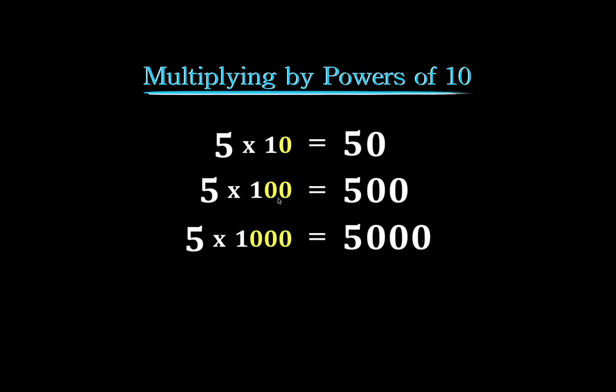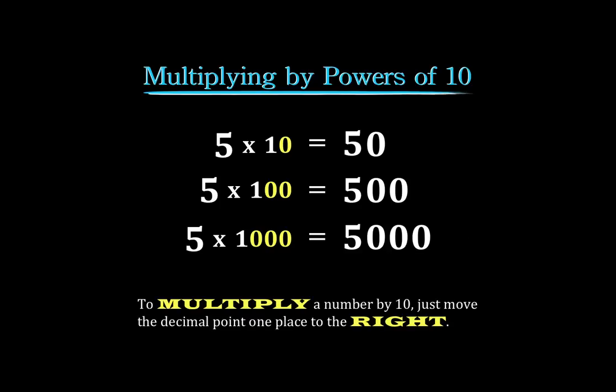So here we're multiplying by a hundred, it has two zeros. We're going to move our decimal place over one, two digits. And a thousand, which has three zeros, we're going to move our decimal place over one, two, three digits and just fill in with zeros there. So when you multiply a number by ten, just simply move that decimal place over to the right. And this is exactly what we're going to be doing to change that decimal divisor into a whole number.